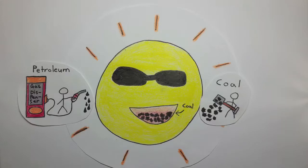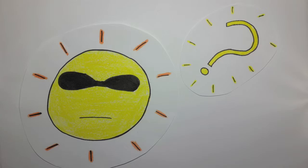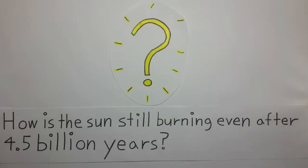If the sun ran using coal or petroleum, it would burn out quickly and we would all die. Fortunately, it doesn't. So then how is the sun still burning even after 4.5 billion years?